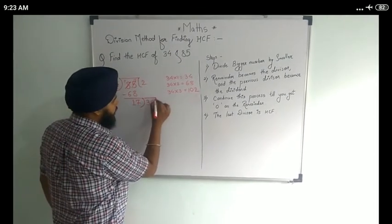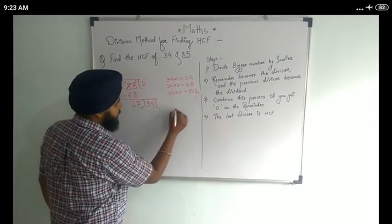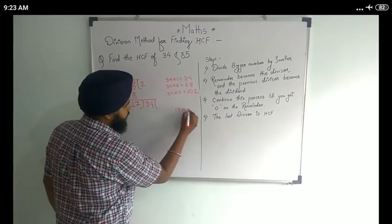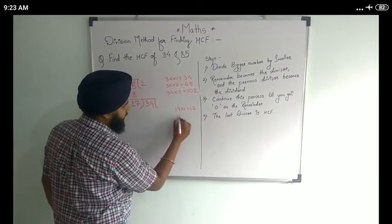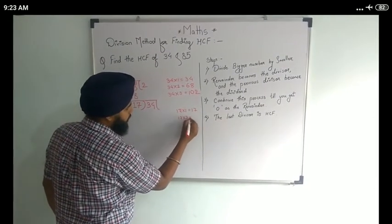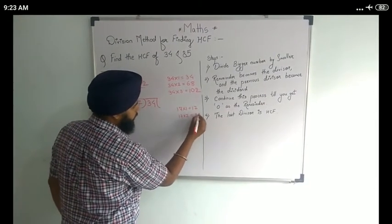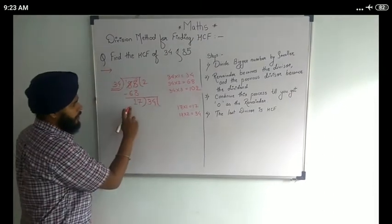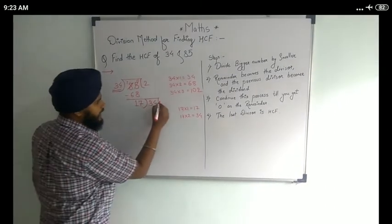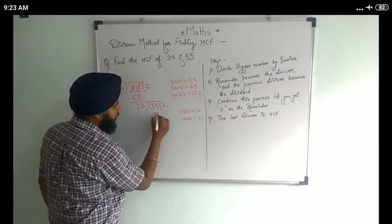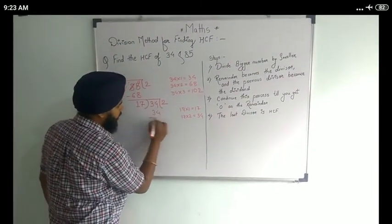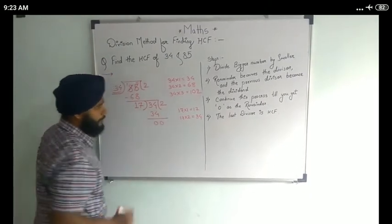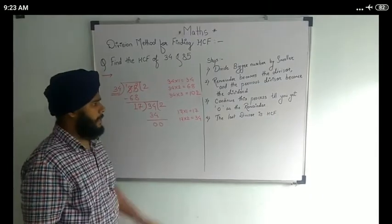We are going to divide 34 by 17. We know that 17 twos are 34. It is completely divisible. So 17 twos are 34.